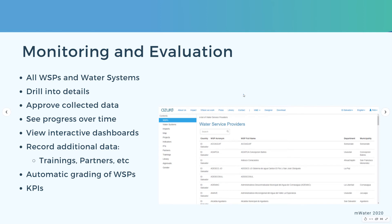The M&E side of the MIS covers all the water service providers and all the water systems that have been entered into the system. You can drill into the details all the way down to individual water system components, if you've collected that data. There's an approval process for the main surveys that feed the indicators, so only finalized data can be shown.